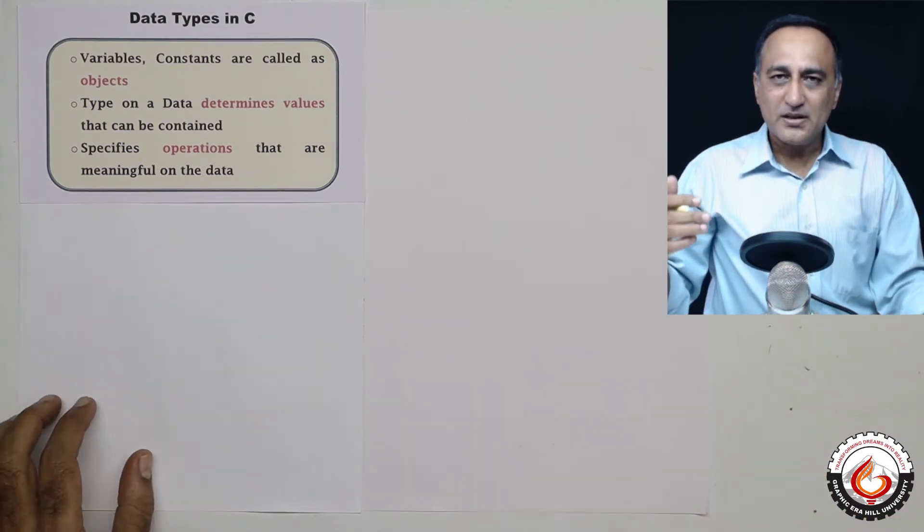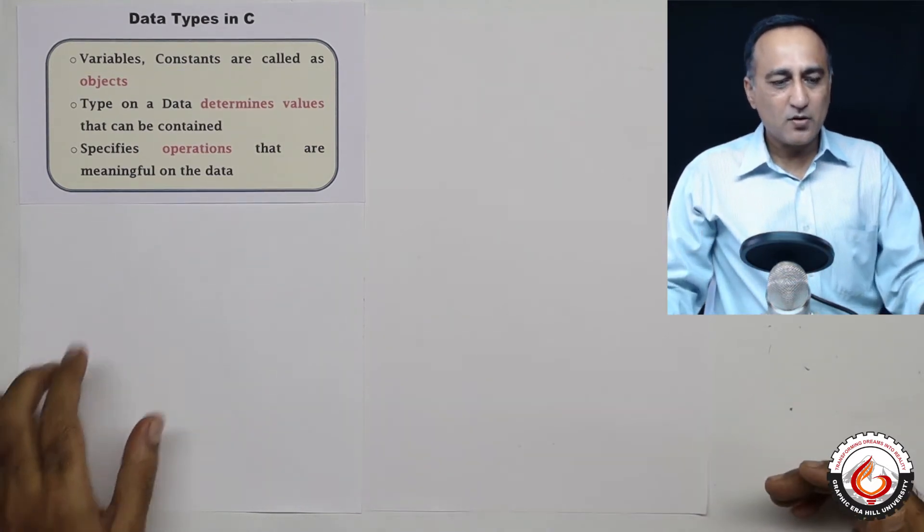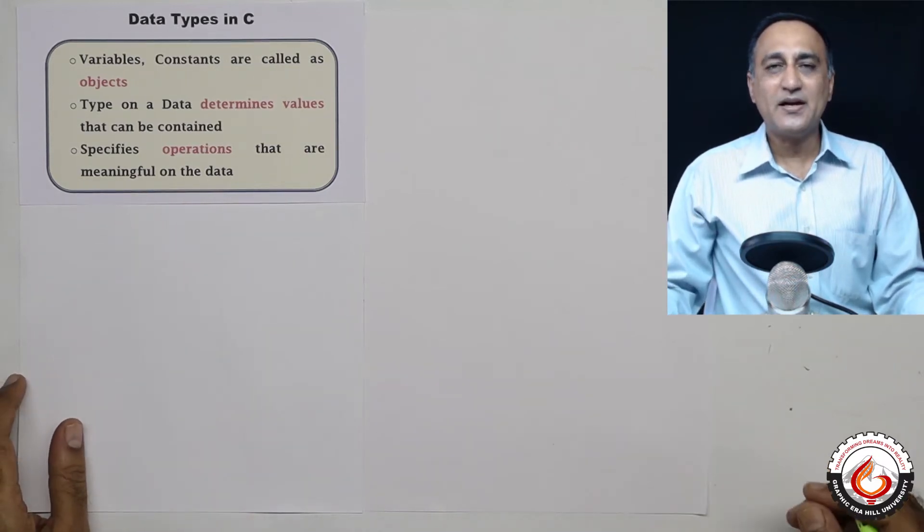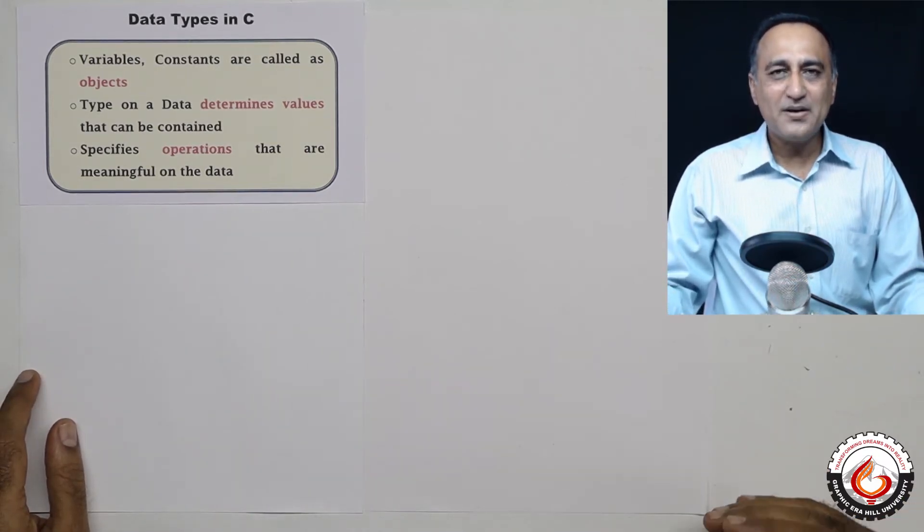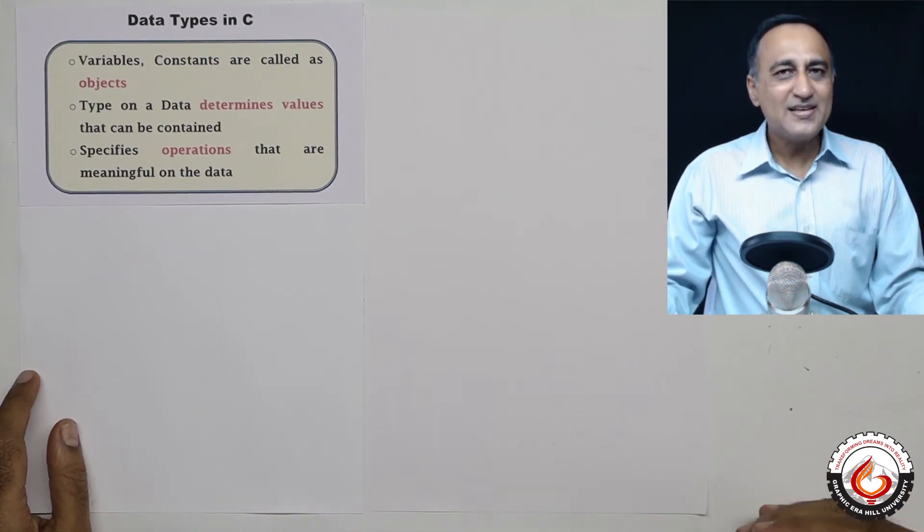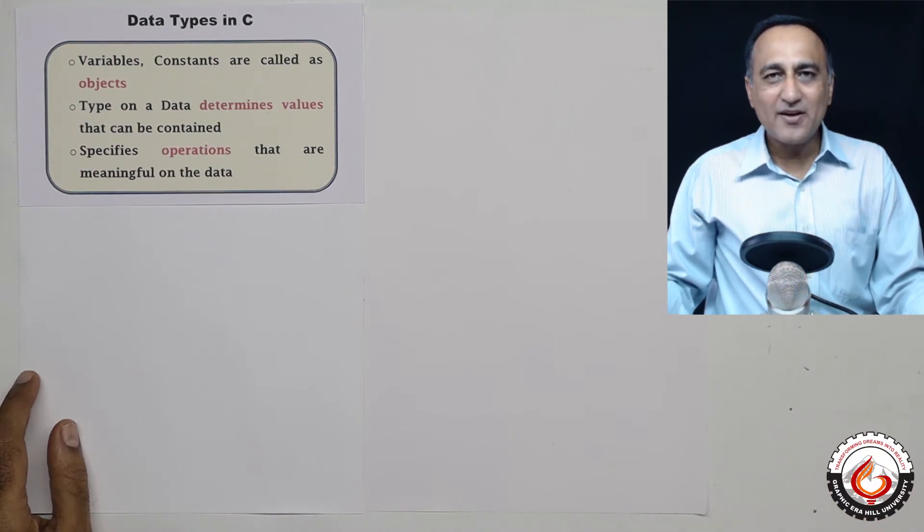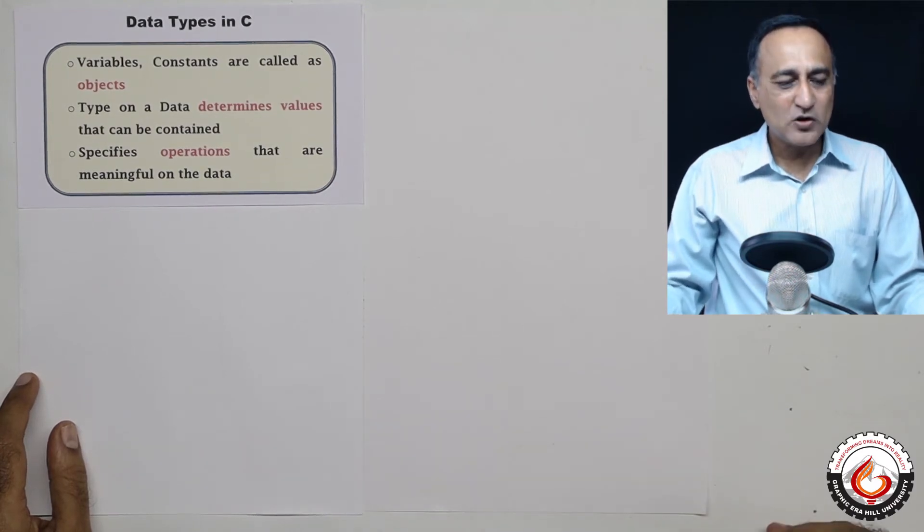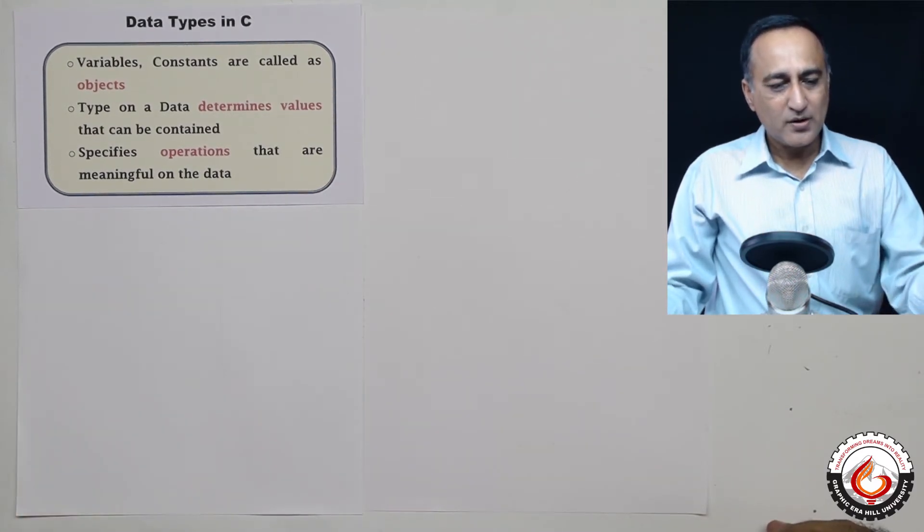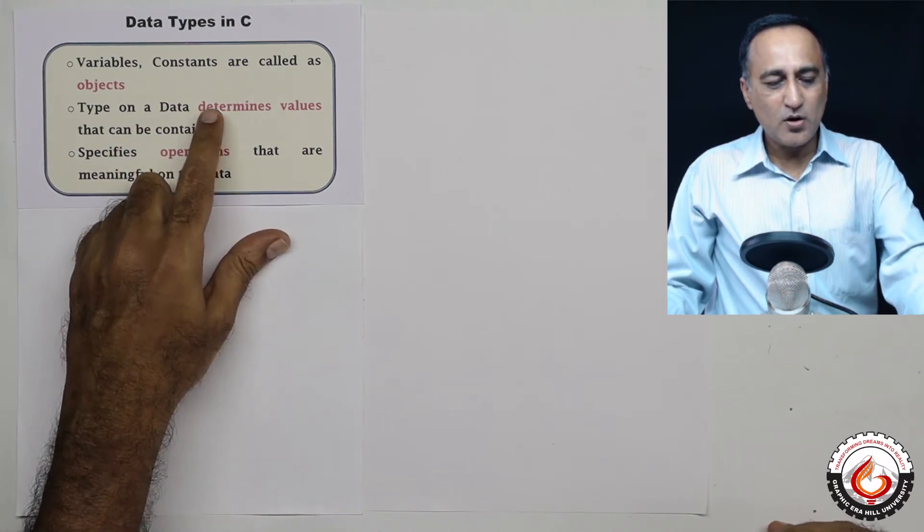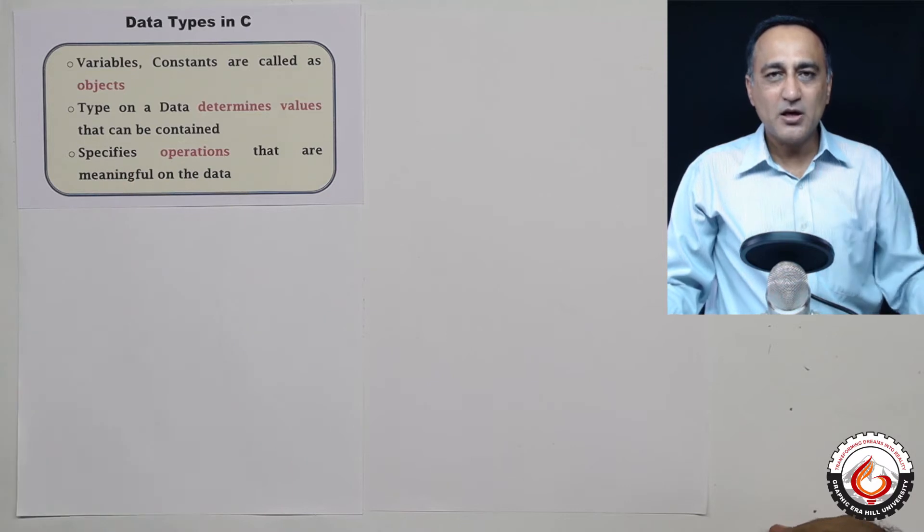The type of data also determines what operations are meaningful on that particular data type. For example, I can add everybody's height or age and find the average. It doesn't make sense to add everybody's addresses or pin codes, that's a meaningless operation. Data type is important for the values it can hold and the operations that can be performed.